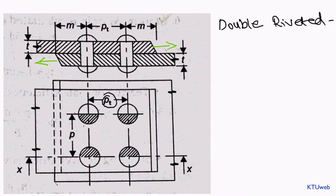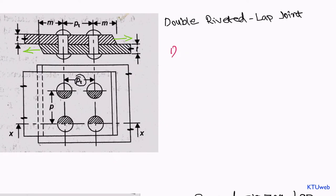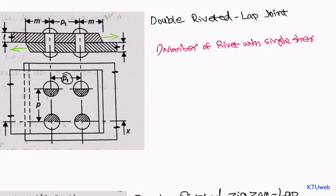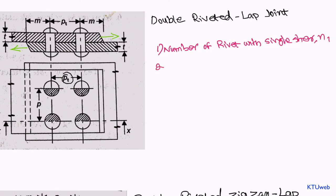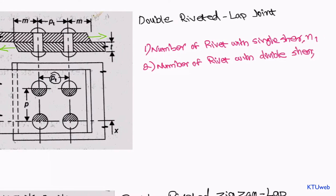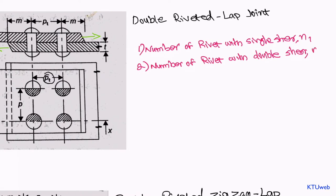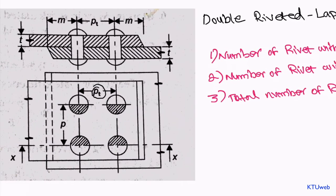Before designing, you should ask three things that will determine how you can move further in the design. Number one: number of rivets with single shear, denoted as n1. Number two: number of rivets with double shear, denoted as n2. Number three: total number of rivets per pitch, denoted simply as n.